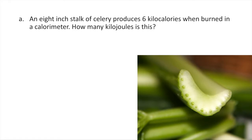This question says an eight-inch stalk of celery produces six kilocalories when burned in a calorimeter. A calorimeter is just a container that keeps heat in — it could be as simple as a styrofoam cup. You burn stuff in it, keep all the heat inside, and measure how much the temperature goes up, so you can tell how much energy was in what you burned. In this case, it's saying you get six kilocalories from the celery. How many kilojoules is this?